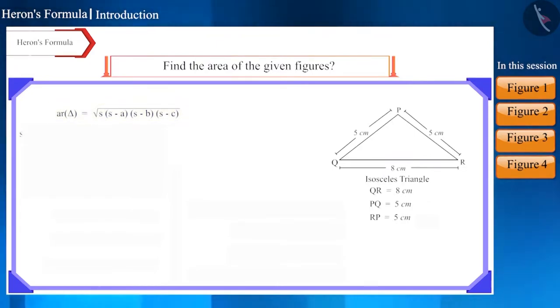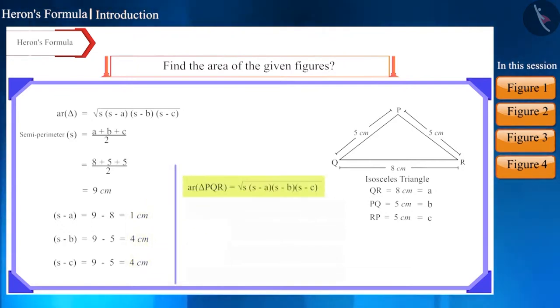We will take the length of A, B and C as 8 cm, 5 cm and 5 cm respectively. Then we will find the semi-perimeter which will be 9 cm. Now we will find the value of S-A, S-B and S-C. We keep this value in Heron's formula and find the area of the triangle.